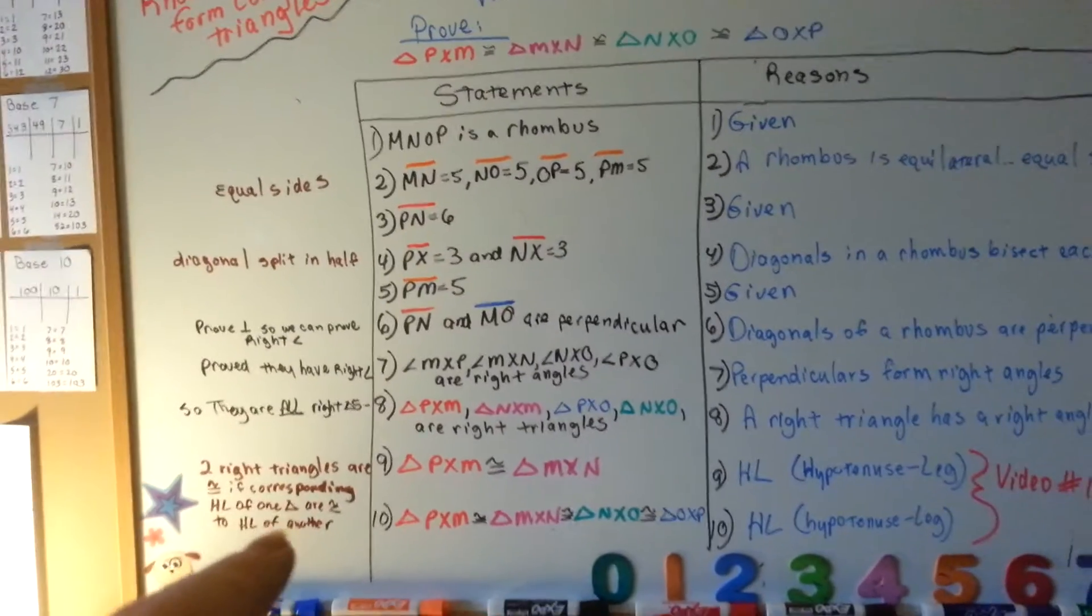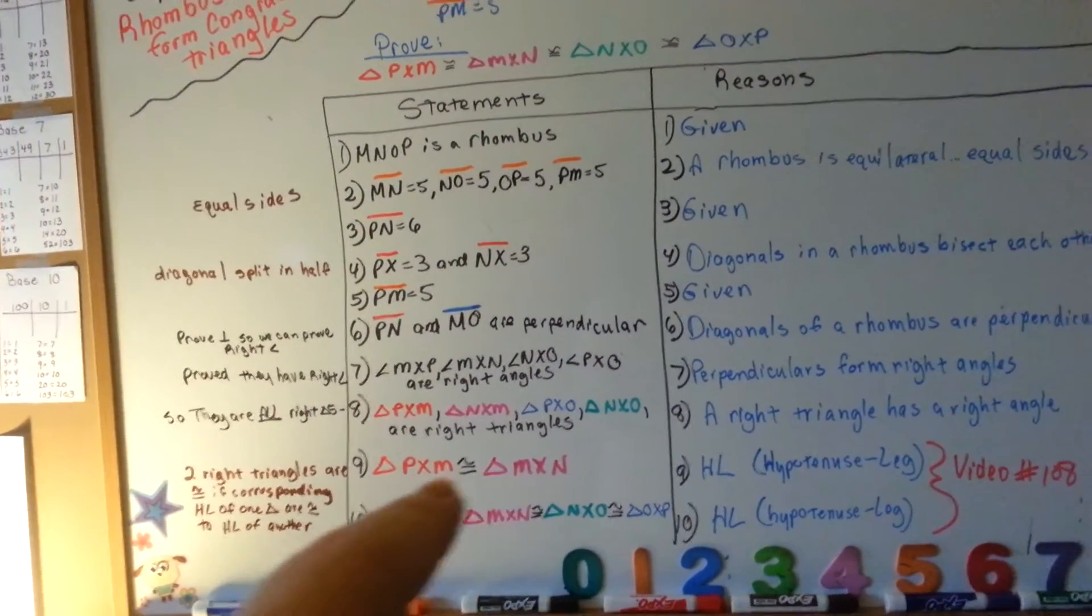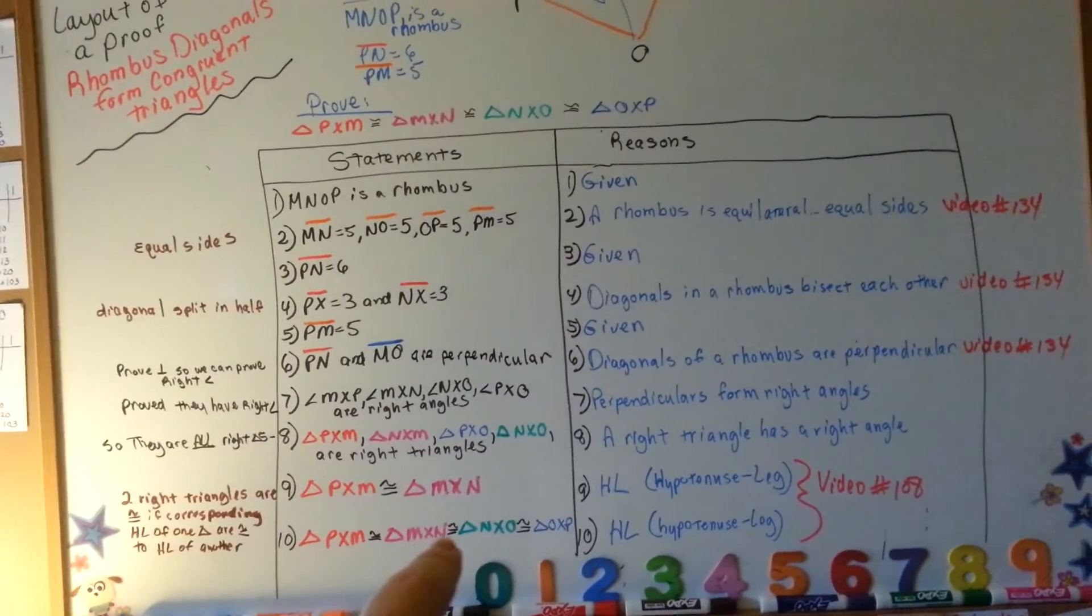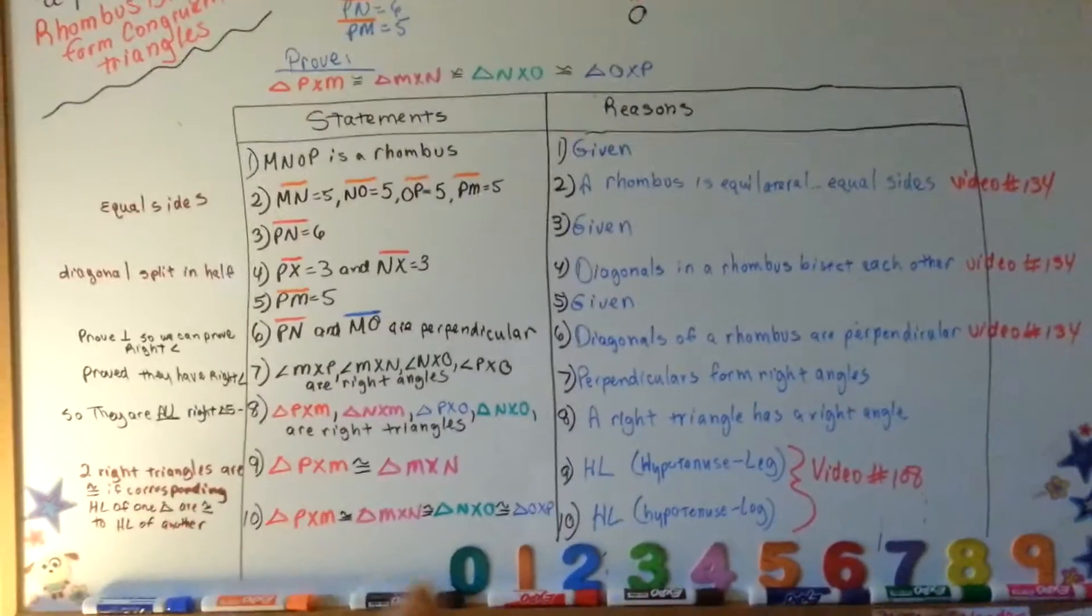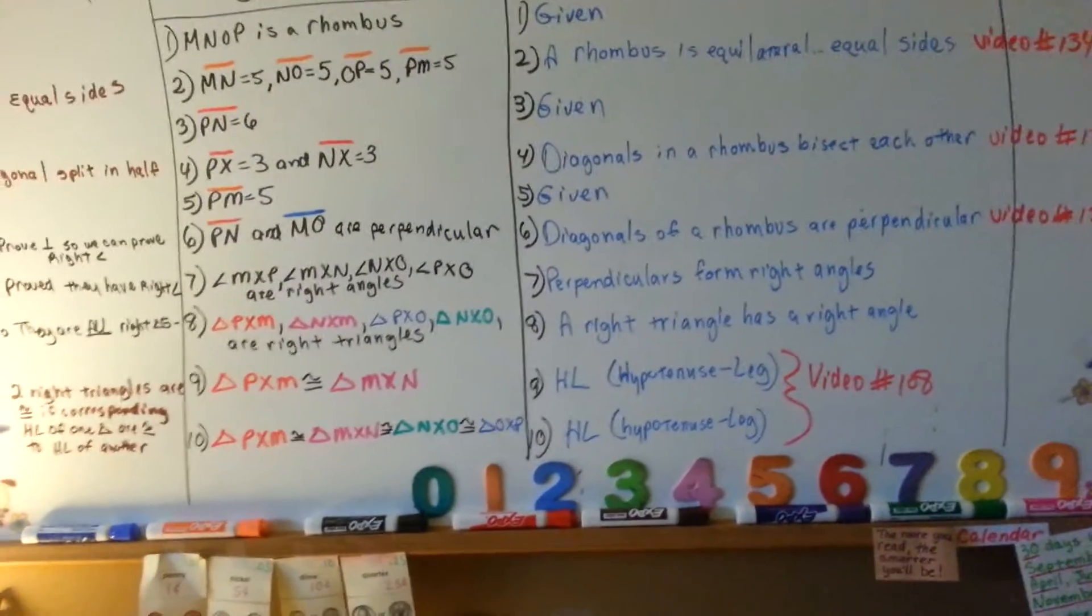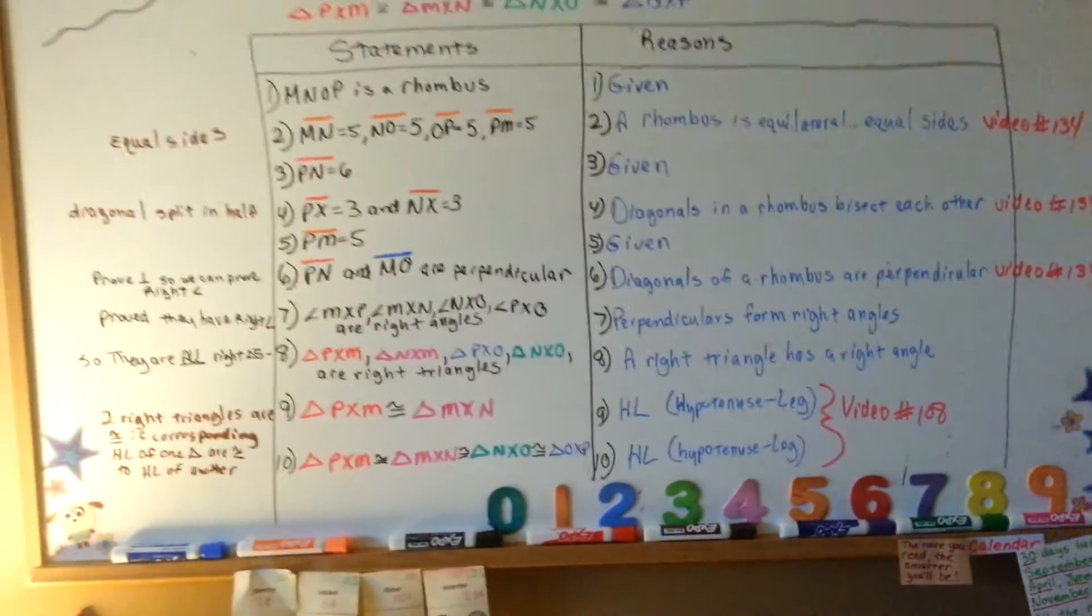Now because we said that they're congruent to each other because of HL, we can now say that all of these rectangles, the red one, the pink one, the blue one, and the green one, are all congruent to each other because of the hypotenuse leg. So again, if you don't know what that is, go back to watch video 108.